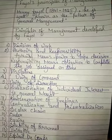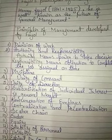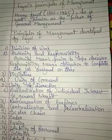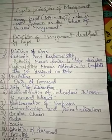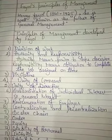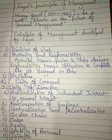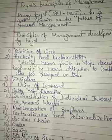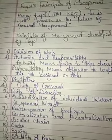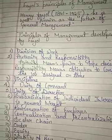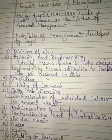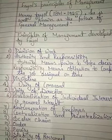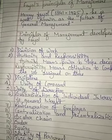The next principle is Subordination of Individual Interest to General Interest. Individual interest means the employee's personal interest, and general interest means the organization's goals. There should be proper subordination — a coordination — between individual interest and organizational interest. When an individual gets a good salary, they will work well, and that benefits the organization too. There should be coordination between the two.